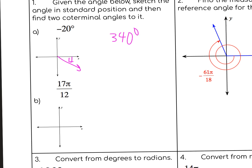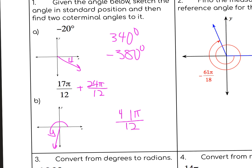I could add another 360, or I could go backwards and say negative 380 degrees — whichever I want. For 17π/12, that's like 1 and 5/12, which is a little less than one and a half, so somewhere here. To find co-terminal angles, I want to add 2π and subtract 2π, but in terms of 12ths that's 24π/12. So 17 + 24 is 41π/12, and if I subtract, 24 minus 17 is 7, so negative 7π/12.